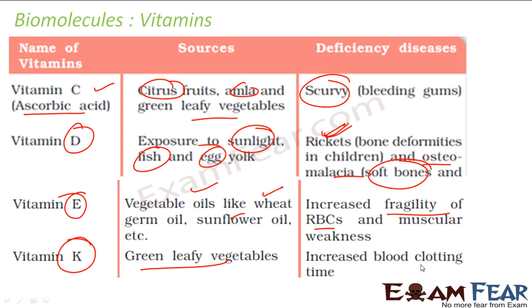Vitamin K is found in green leafy vegetables. This helps in blood clotting. If we don't take this properly, it will take more time to clot, so even a small injury may cause big damage to you.